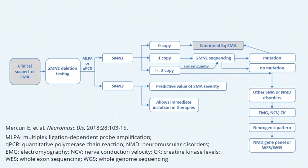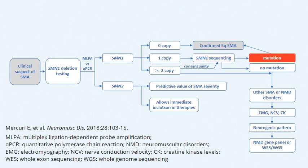But in families that have consanguinity with two copies of SMN1, it's important to proceed with SMN1 sequencing to try to see if there are two point mutations. If we find one point mutation in each allele, we can confirm the SMA diagnosis.